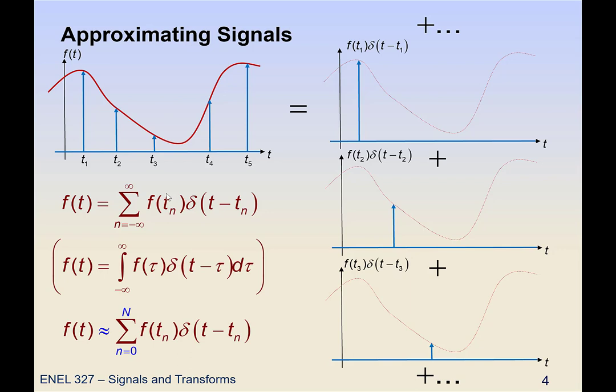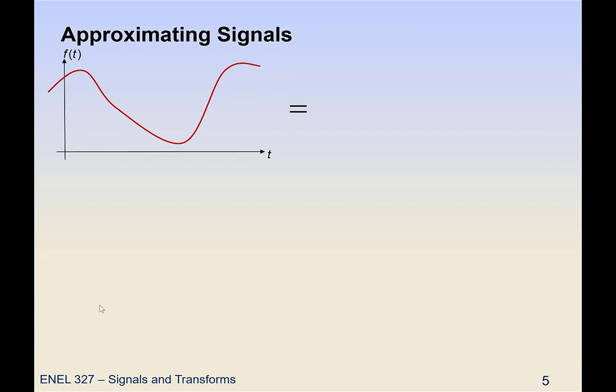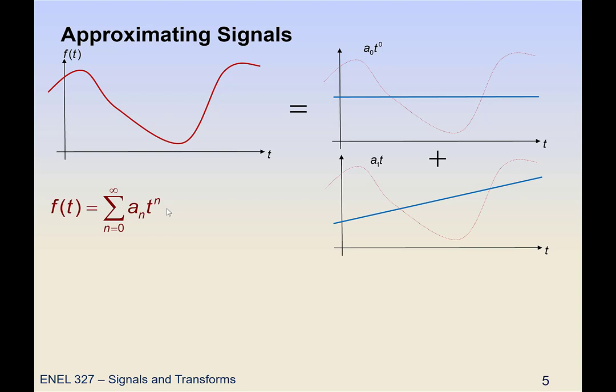But we could also take that infinite sum and we could terminate it. We could terminate it at some value capital N. And at that point we have some approximation to f. But we are not restricted to just using impulse functions to approximate f. So for instance we could use polynomials. If we take a look at the first couple terms in that series, the first term is a constant, the second term is a straight line, and the third term is a parabola.